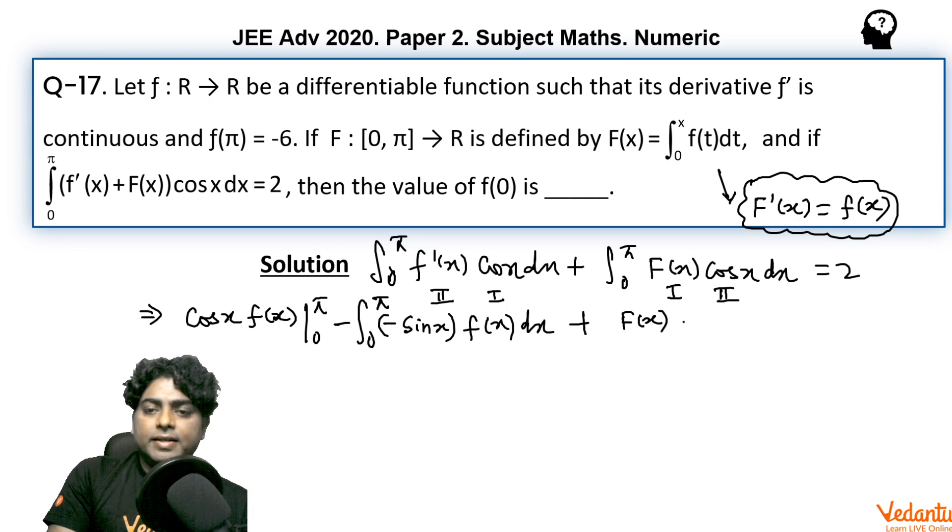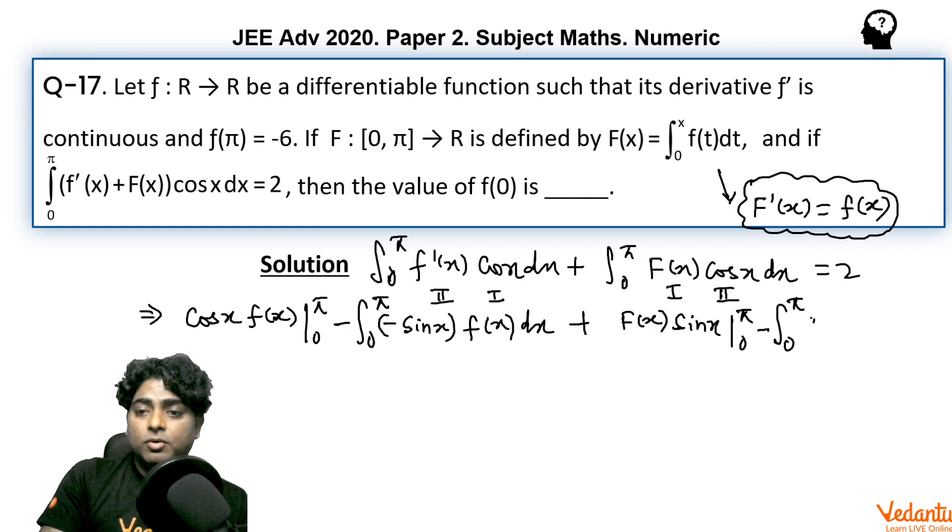and the integration of cos(x) is sin(x), so F(x)·sin(x) from 0 to π, then minus integral from 0 to π of (derivative of F, that is f(x))·sin(x)dx.